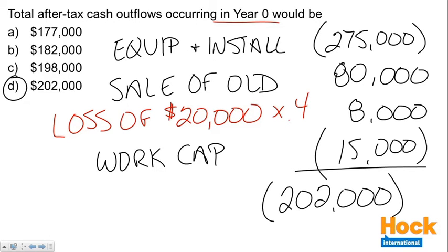That net cash outflow of $202,000 is choice D in this question. So in year zero we've got the purchase of the equipment, the sale of the old equipment, the tax implications of the tax loss, and the increase in working capital. That's the first question.